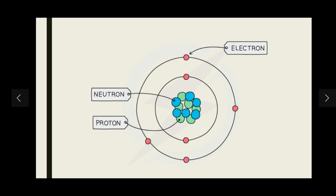Taking helium as an example: from the periodic table, helium has a mass number of 4 and an atomic number of 2. This tells us the full name and chemical symbol (He), as well as the proton number and mass number. The proton number (atomic number) is the number of protons in the nucleus; the mass number (nuclear number) is the total number of nucleons (protons + neutrons); and the number of electrons always equals the number of protons.